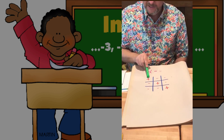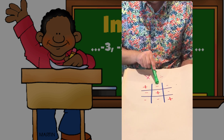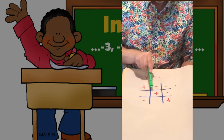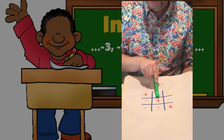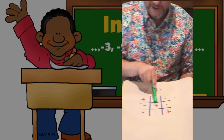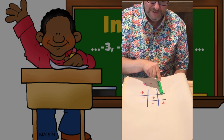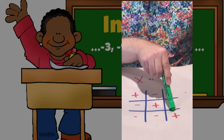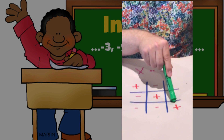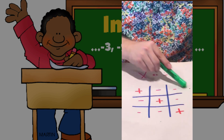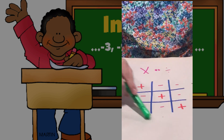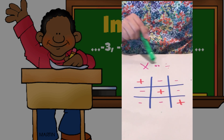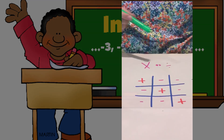A positive number divided by a negative number is a negative answer. A negative number divided by a positive number is a negative answer. A negative divided by a negative is a positive answer. This is the key right here — if you can remember this picture, you will never miss multiplying or dividing.